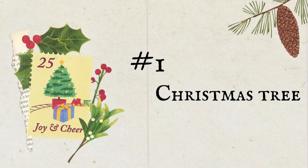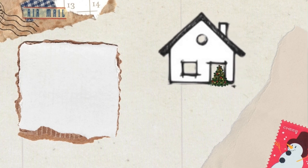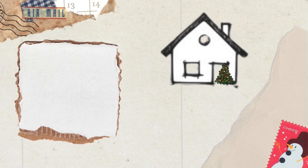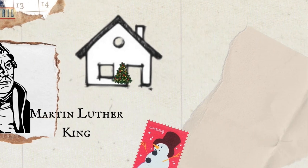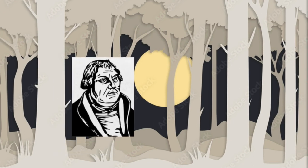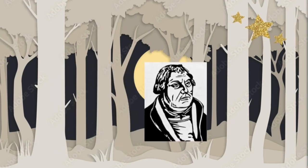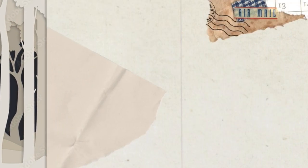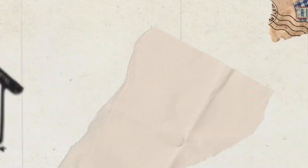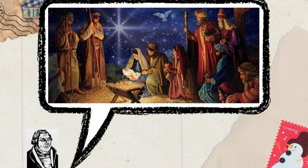Number 1: Christmas Tree. Legends have it that the first person to bring a Christmas tree into a house was a German preacher, Martin Luther, in the 16th century. A story is told that one night, before Christmas, he was walking to the forest and looked up to see the stars shining through the tree branches. It was so beautiful that he went home and told his children that it reminded him of Jesus, who left the stars of heaven to come to earth at Christmas.